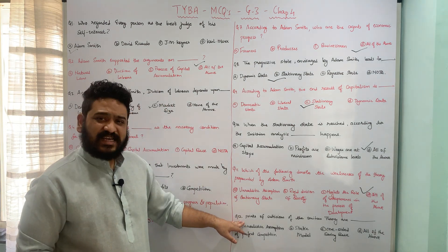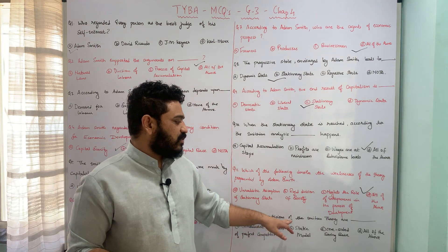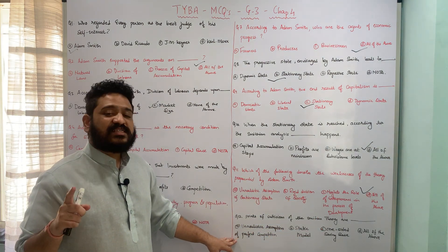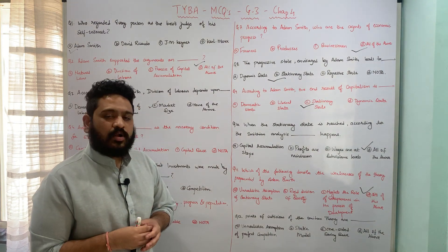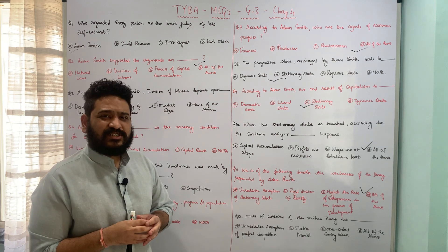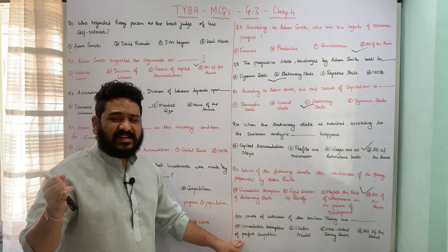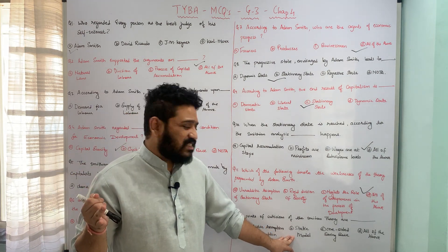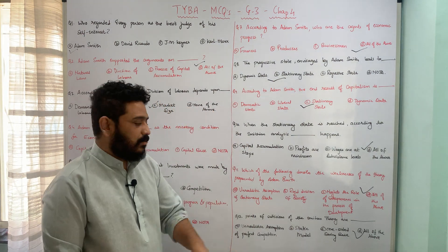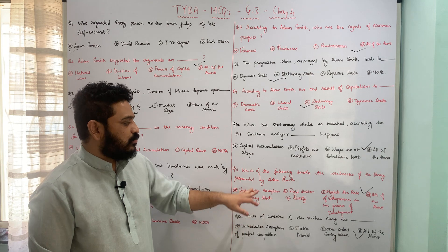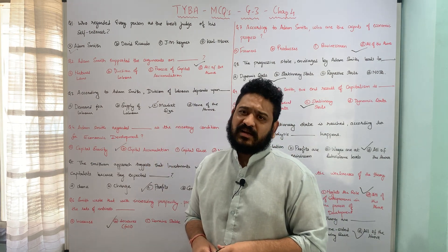The last question: the points of criticism of the Smithian theory are — A unrealistic assumption of perfect competition, B static model, C one-sided saving base, or D all of the above. All these criticisms are valid: unrealistic assumption of perfect competition, the model is static according to Hicks, and one-sided saving base exists. Option D, all of the above, is the correct answer. In all, we have seen six points of criticism of the Smithian theory. I hope the idea of economic development through Adam Smith's lens is clear. Please stay tuned for more. Thank you.